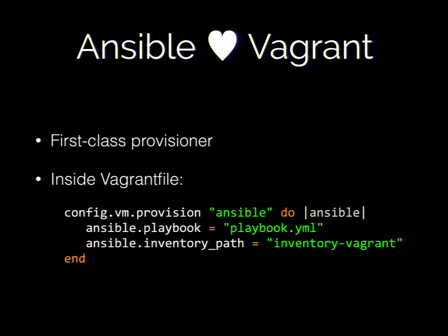All the commands I'm running today are running through Vagrant on my localhost. Ansible works perfectly fine with Vagrant, and an advantage is you can test all your infrastructure — including multi-server setups — on your local computer. To do that, you define a provisioner, give it a playbook, and give it an inventory file, or it uses the one at /etc/ansible/hosts.